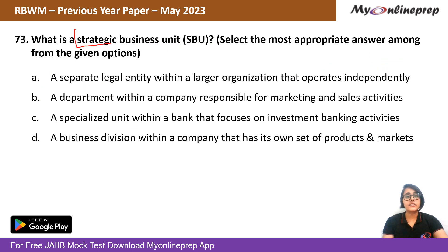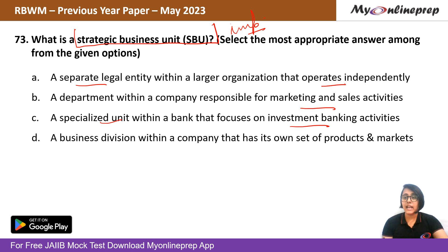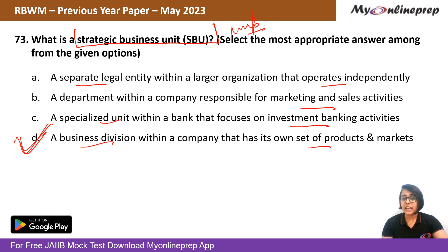Question 73: What is a Strategic Business Unit (SBU)? Options: (A) a separate legal entity operating independently; (B) a marketing and sales department; (C) a specialized unit focusing on investment banking; (D) a business division within a company that has its own set of products and markets. An SBU is a business division within a company with its own products, markets, and strategies. The right answer is option D.